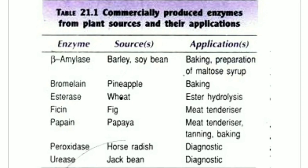Ficin is another enzyme obtained from fig; it is used as a meat tenderizer. Papain, obtained from papaya, is also a meat tenderizer used for tanning and baking. Peroxidase is obtained from horseradish, and urease is obtained from jack bean; both enzymes are used for diagnostic purposes.